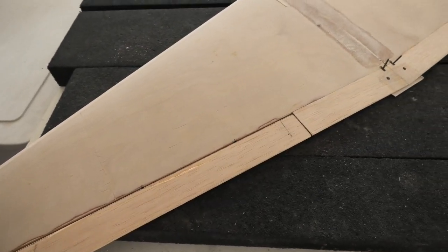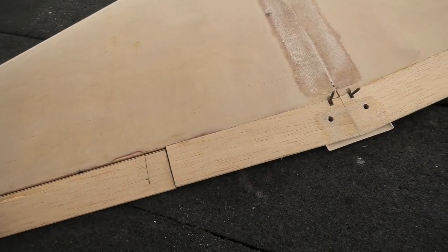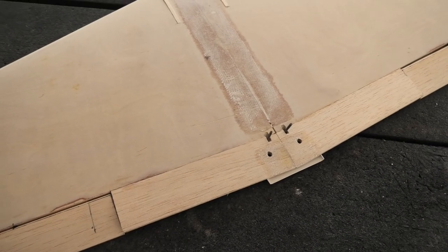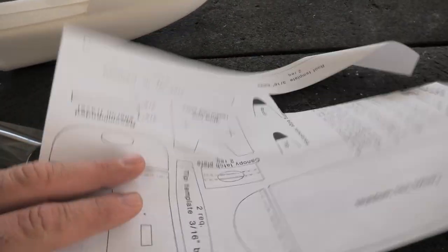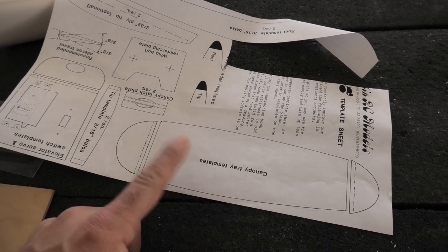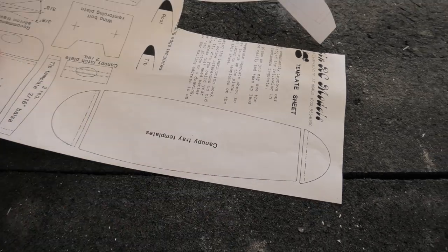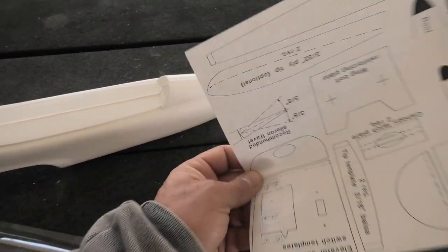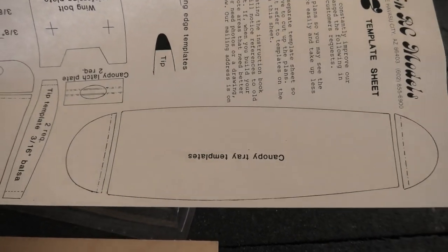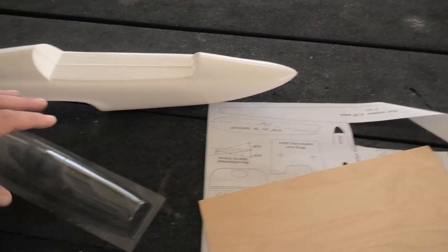I'm going to set this aside for now and start working on the canopy tray. I still have to hinge the elevator. When I finish the canopy tray, I'll do the hinges on the elevator. The instructions call for cutting out three pieces of this plywood to make the canopy tray. I'm a little skeptical how accurate these drawings are to match the fuselage shape. I'll cut the paper out first and just place them on here and see how accurate things are. This is the plastic canopy.